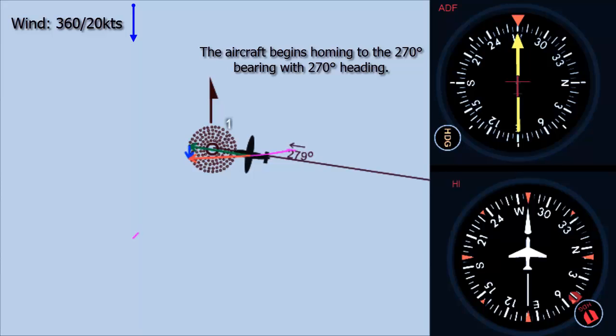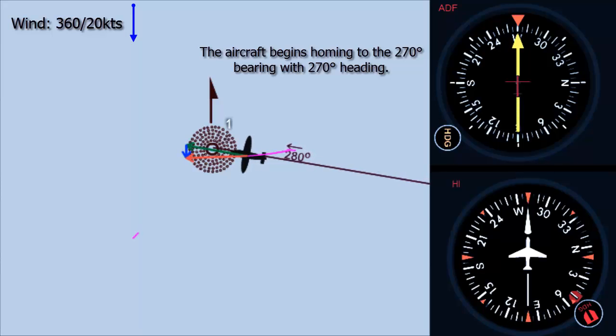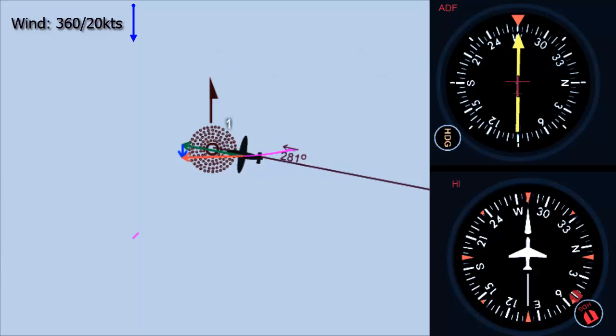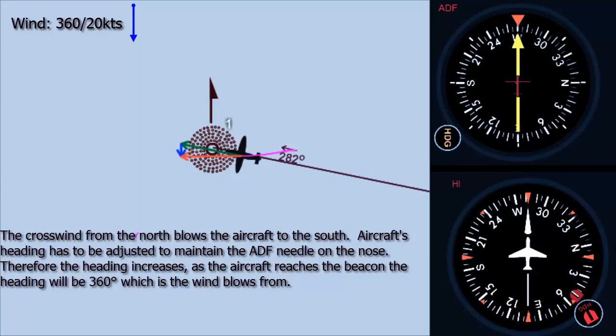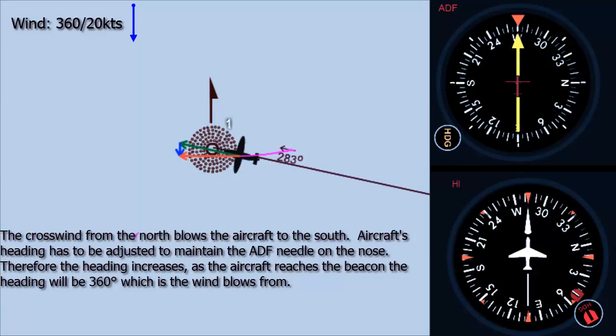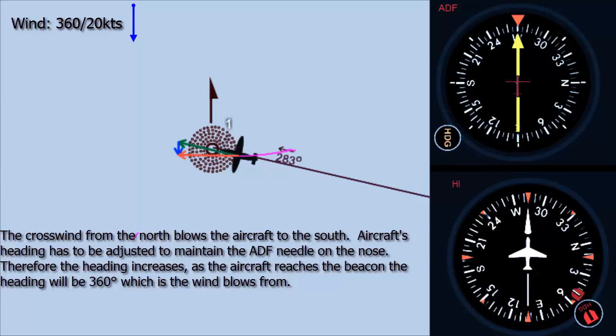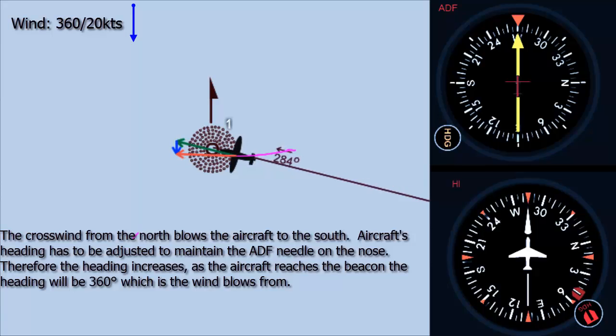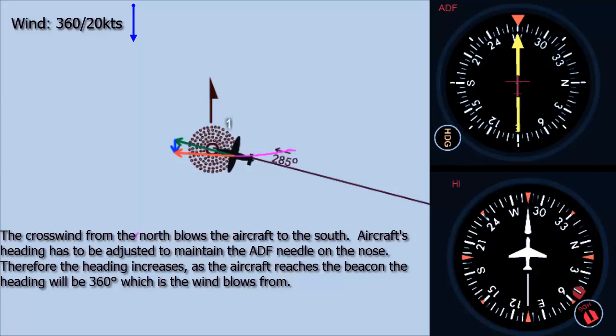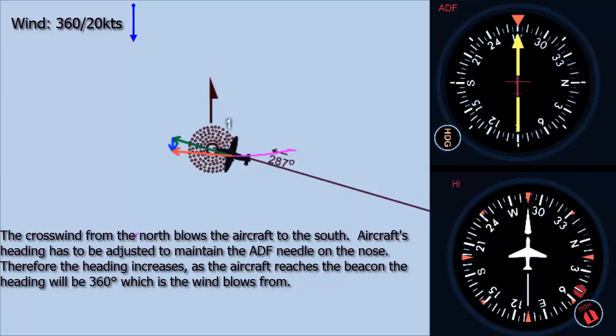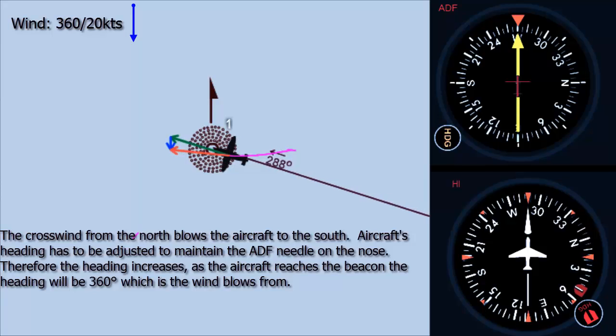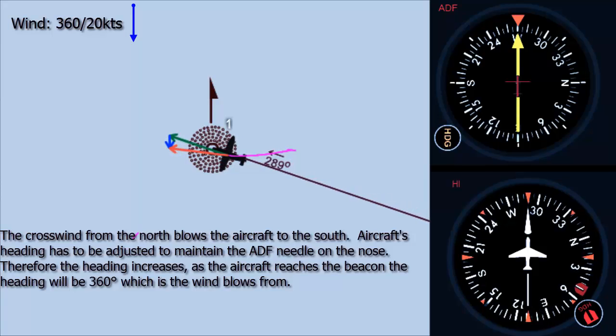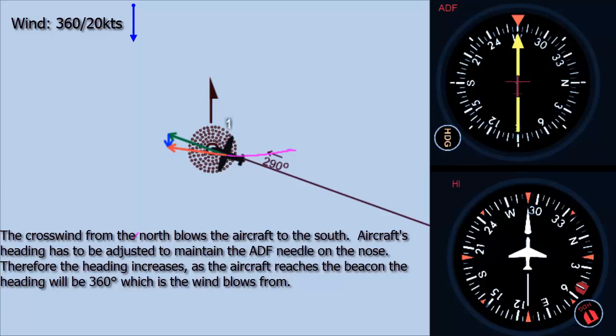The aircraft begins homing to the 270 degrees bearing with 270 degrees heading. The crosswind from the north blows the aircraft to the south. Aircraft's heading has to be adjusted to maintain the ADF needle on the nose. Therefore, the heading increases. As the aircraft reaches the beacon, the heading will be 360 degrees, which is the wind blows from.